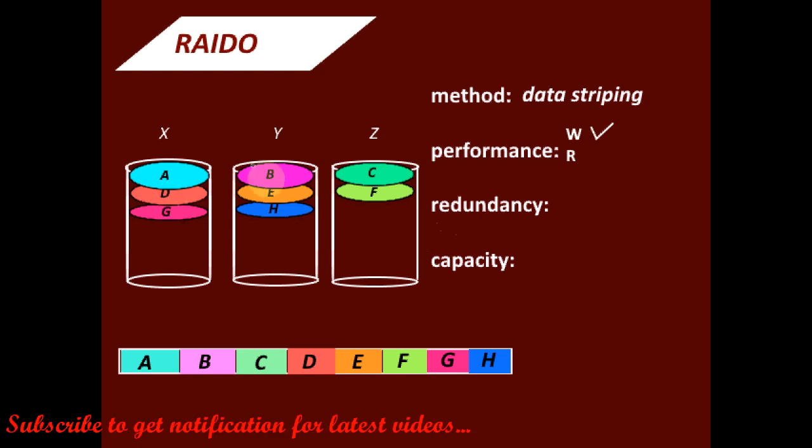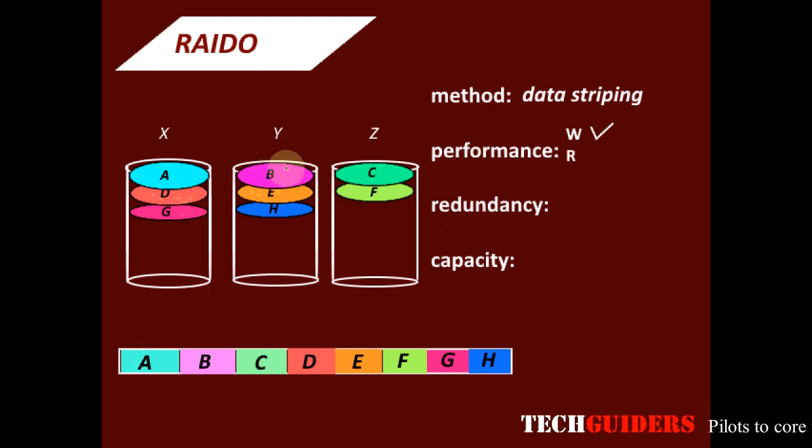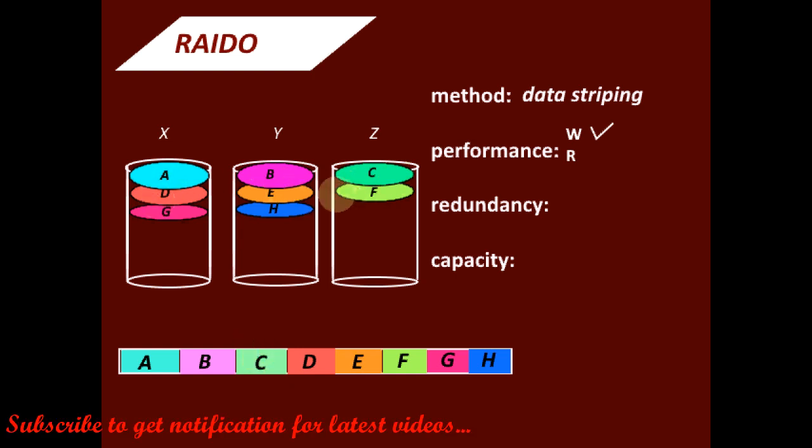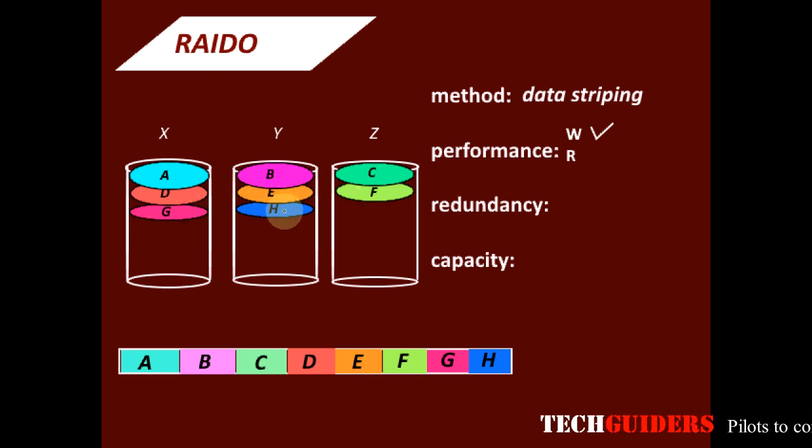Similarly, while reading block A from disk X, we can parallelly read block B from disk Y and block C from disk Z. Also blocks D, E and F can be read simultaneously. G and H can also be read in parallel fashion. Hence improved read performance too.